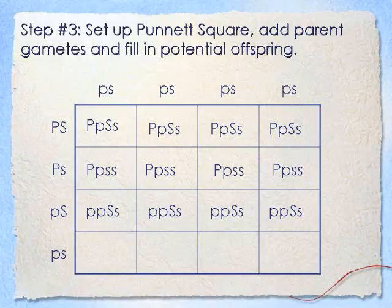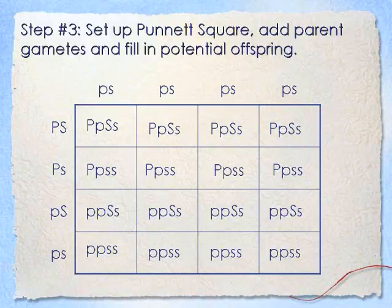Now filling the third row, it's going to be little p with little p all the way across, and big S, little s all the way across. Lastly, I'm going to fill the last row: little p, little p all the way across, and then little s, little s all the way across. This will finish my Punnett square.